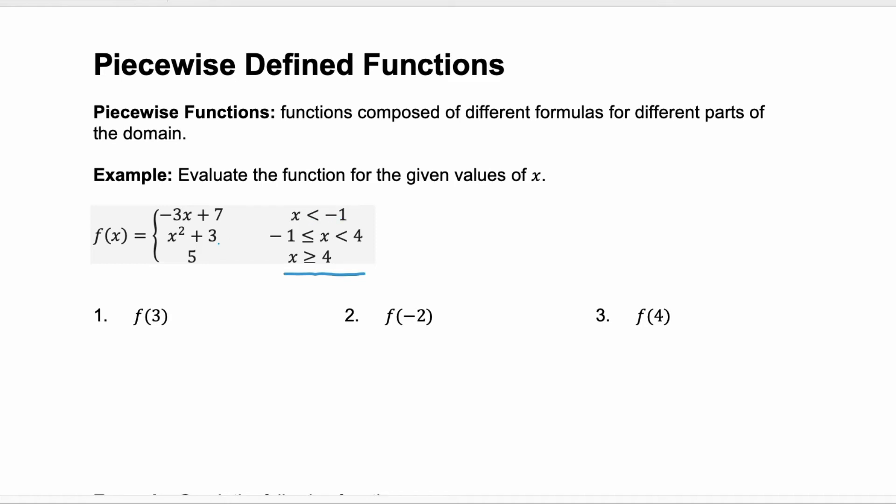But that middle piece, x squared plus 3, is going to be when we have x between negative 1 and including negative 1, all the way to that positive 4. And then once we are at 4 or larger, it's the constant function 5.